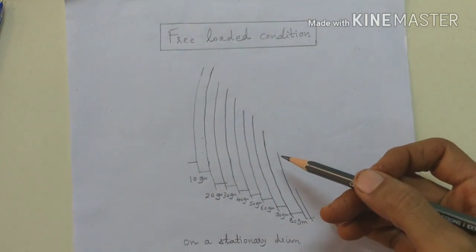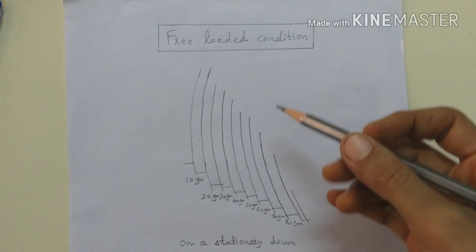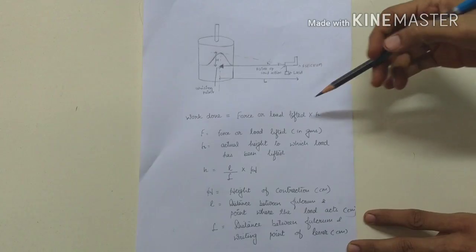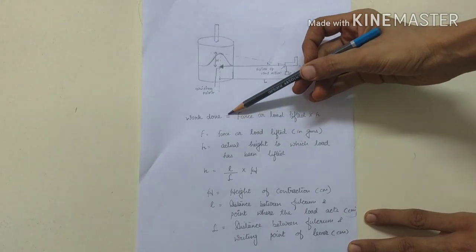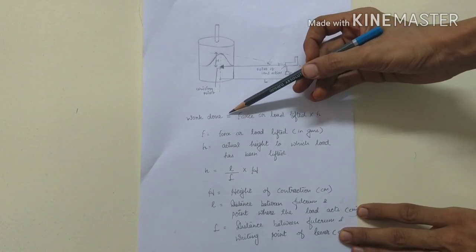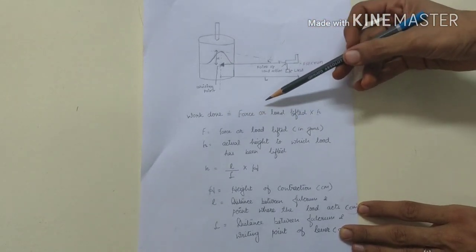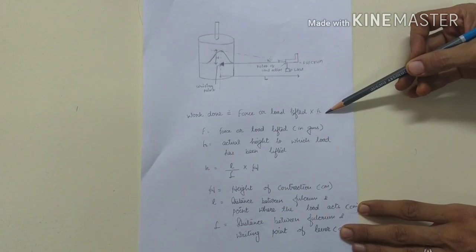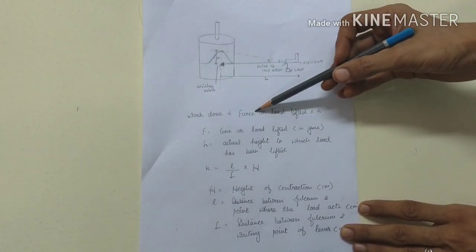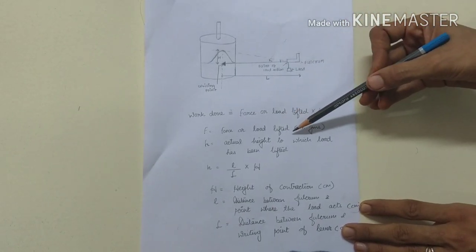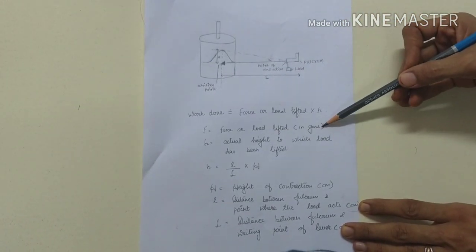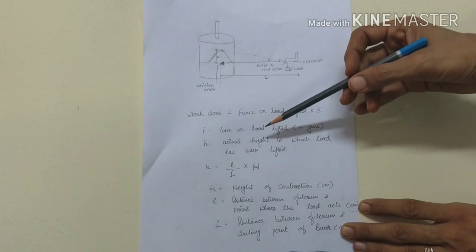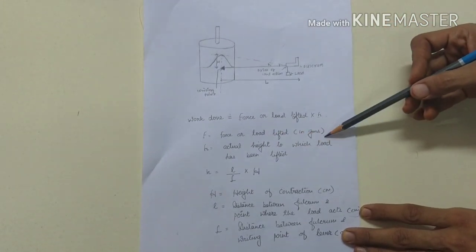This graph shows the effect of free-loaded condition on a stationary drum. Now, how to calculate work done. Work done is calculated by the formula: work done equals force or load lifted multiplied by height in centimeters. The force or load lifted is measured in grams, multiplied by the height.